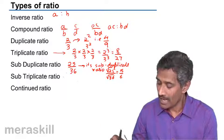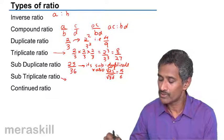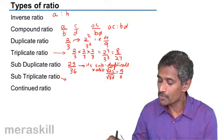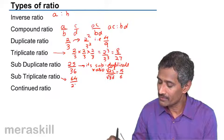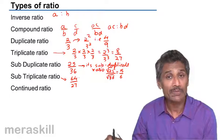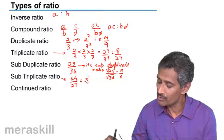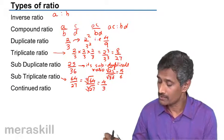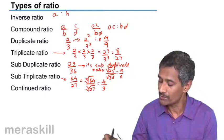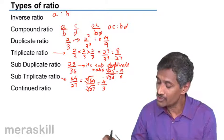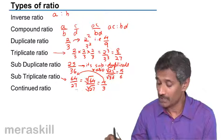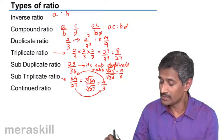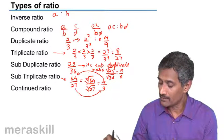We have sub triplicate ratio, which is just the reverse of the triplicate ratio. The cube root of the given ratio is the sub triplicate ratio. Suppose you have 64 by 27 and you want to find the sub triplicate ratio - it's going to be cube root of 64 upon cube root of 27, which is 4 upon 3. Remember, the triplicate ratio of 4 by 3 is 64 by 27, and the sub triplicate ratio of 64 by 27 is 4 by 3. They share a kind of inverse relationship.